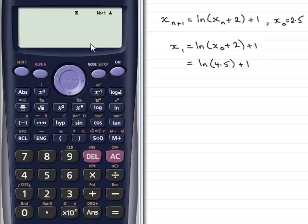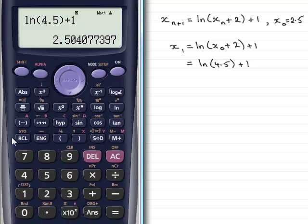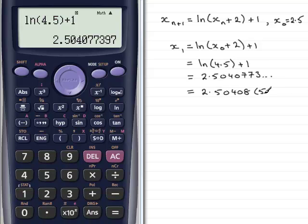And if I work this out on the calculator over here, we'll just type in the natural log of 4.5, close the brackets off, and add 1. And what have we got? We've got 2.504, etc. So, let's just put that in there, 2.5040773, and so on. We've got to give the answer to five decimal places, so that's going to be 2.50408 to 5dp.